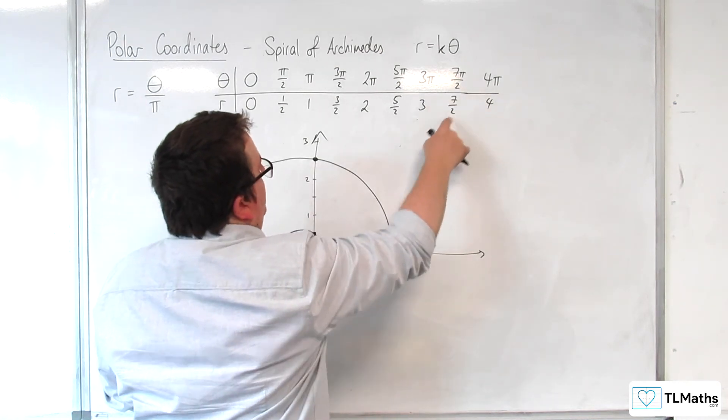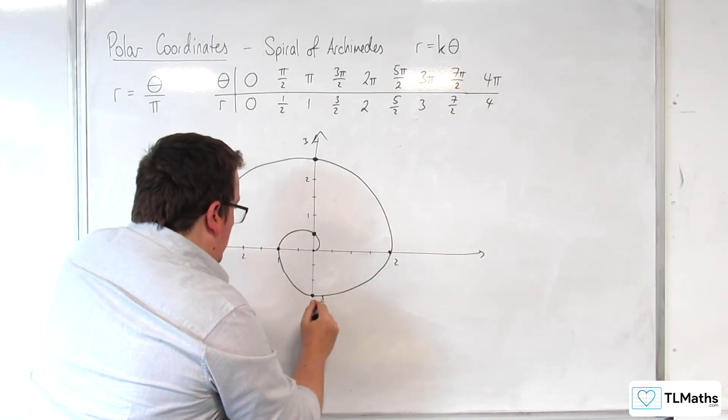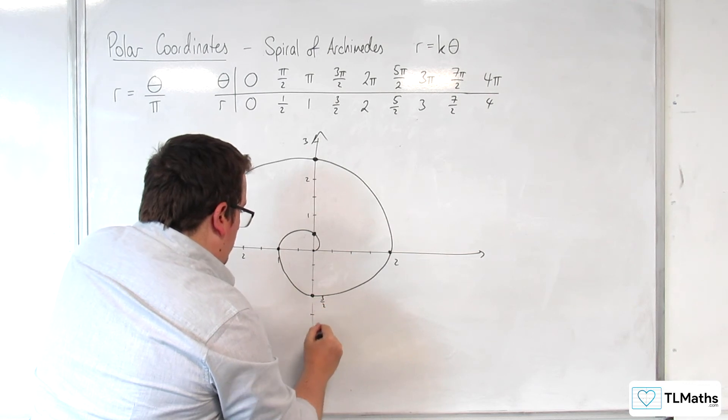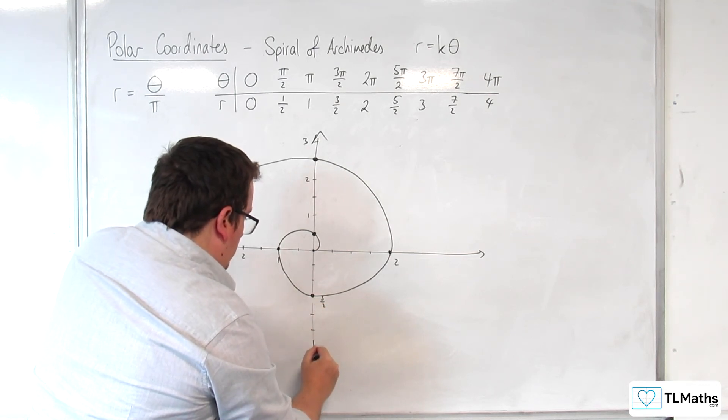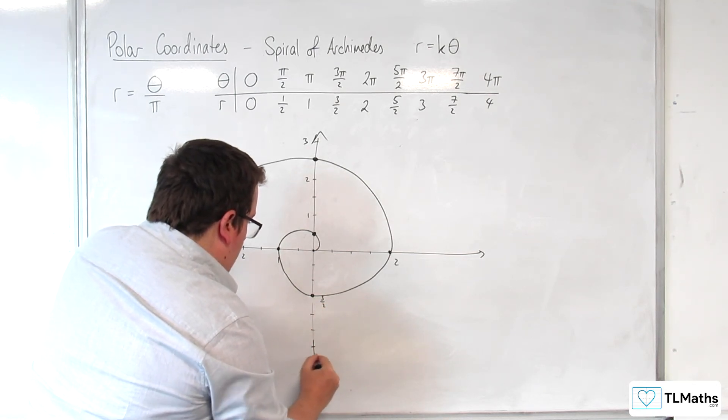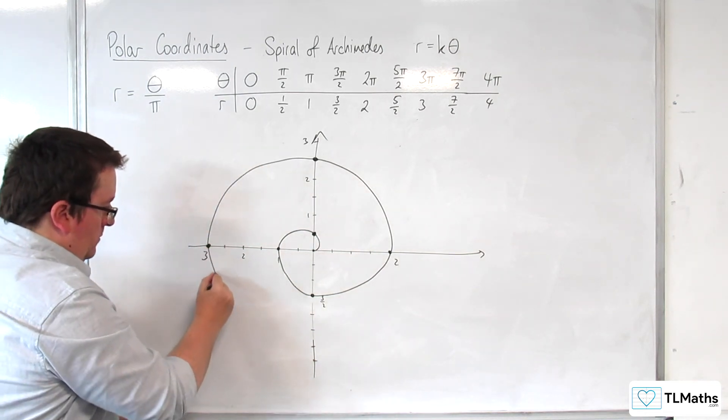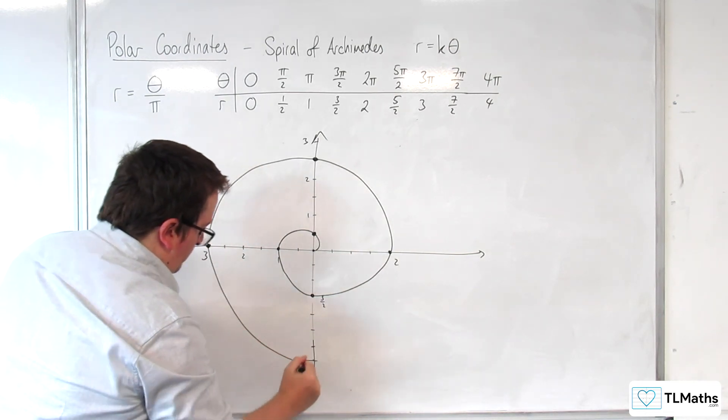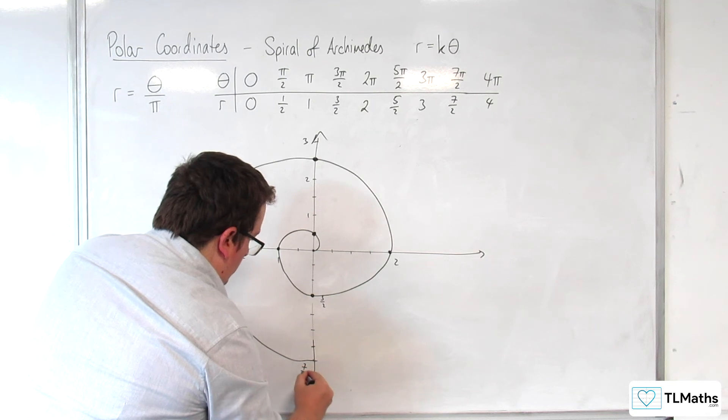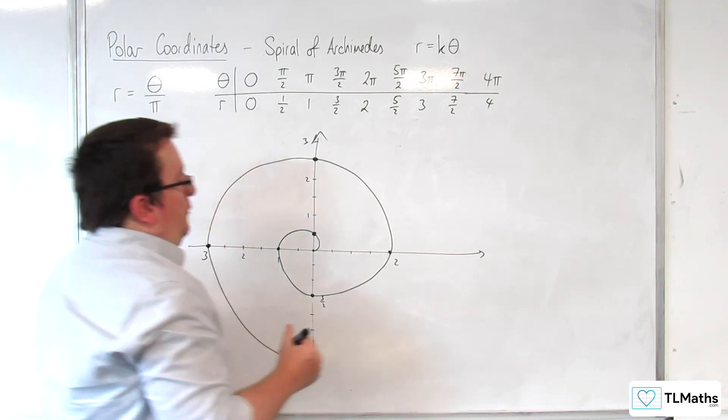OK. And then when we're at 7 pi over 2, we're at 7 halves. So, 3 halves, 4 halves, 5 halves, 6 halves, 7 halves.